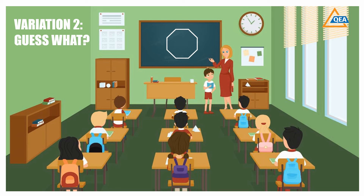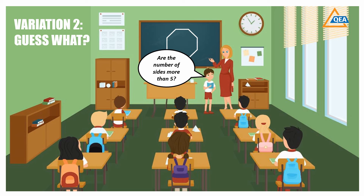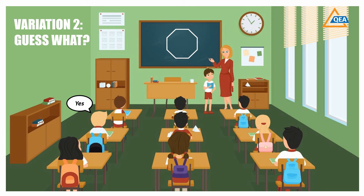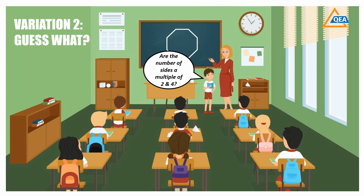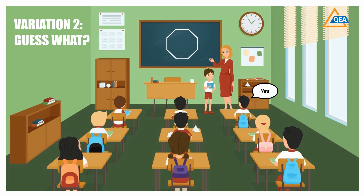For example, a teacher draws an octagon on the board and tells the student that she has drawn a polygon and the student has to find out which polygon it is. The child may then ask questions like: 'Are the number of sides more than five?' or 'Are the number of sides a multiple of two and four?' Likewise, the child will keep asking questions till the correct answer is reached or the maximum number of questions are over.